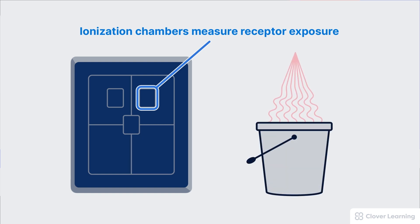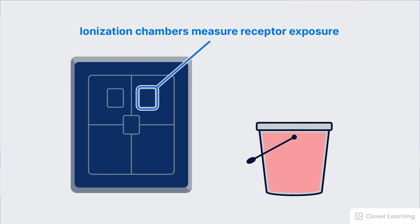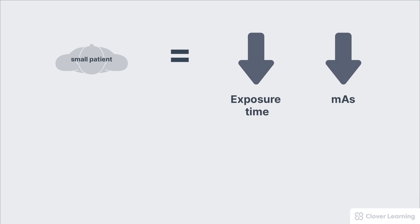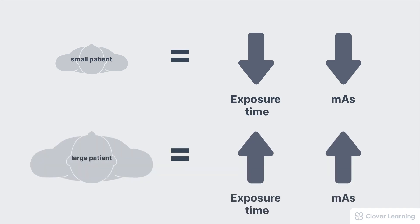Think of these ionization chambers as buckets. These chambers collect radiation during the exposure, and once the bucket is full, the exposure shuts off. Exposure times can vary widely depending on the patient size. For small patients and small parts, the AEC system will shut down the exposure sooner, resulting in a shorter exposure time and a lower mAs — which is exactly what we want for a smaller patient. For larger patients and larger parts, the AEC system will extend the exposure time longer, resulting in a larger mAs, and that's exactly what we want.